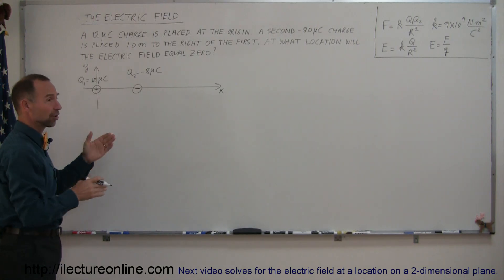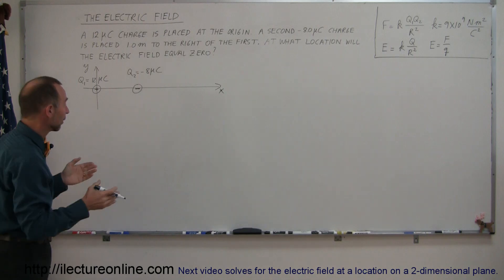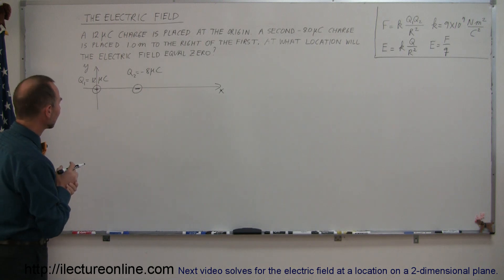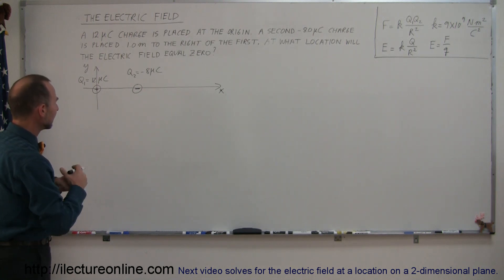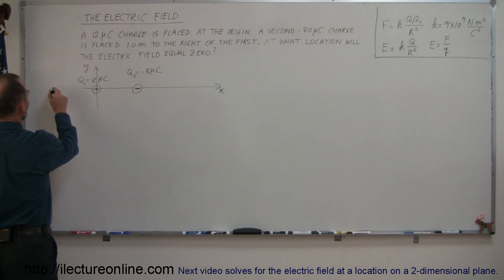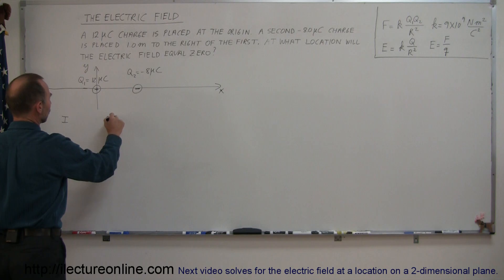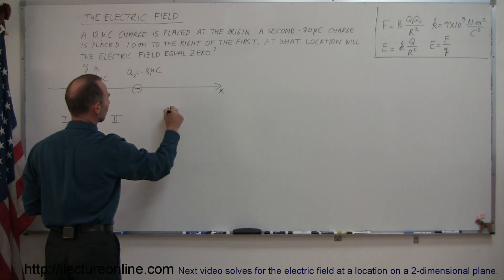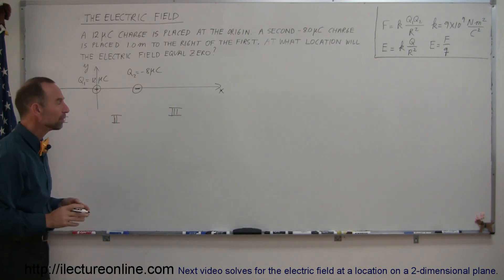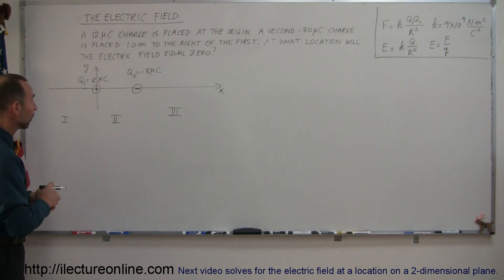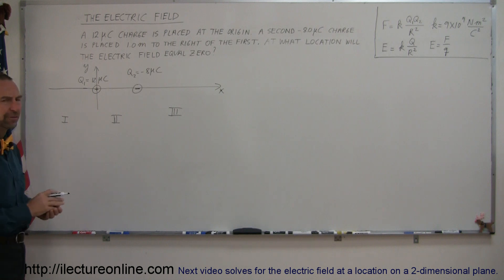Since Q1 is positive and Q2 is negative, the electric fields caused by each one will be in different directions, so they can cancel each other out. We want to find a place where they cancel such that the net result is zero. Let's imagine three regions: region one to the left of both charges, region two between the two charges, and region three to the right of both charges. Probably only one of the three regions will allow the fields to cancel to zero.